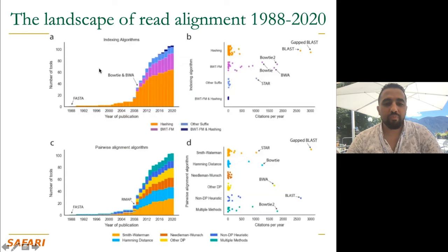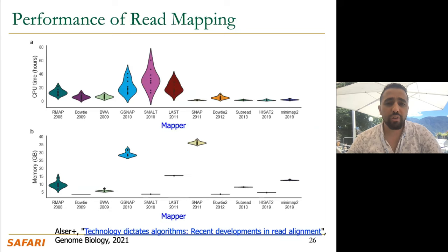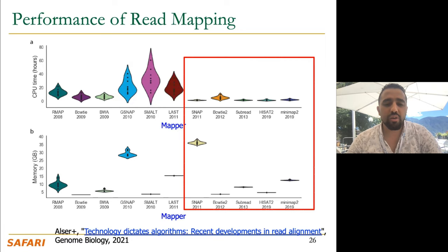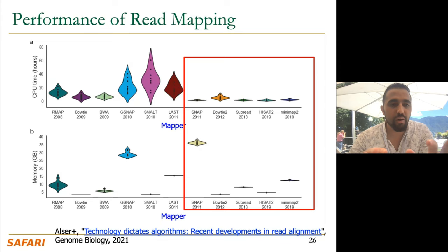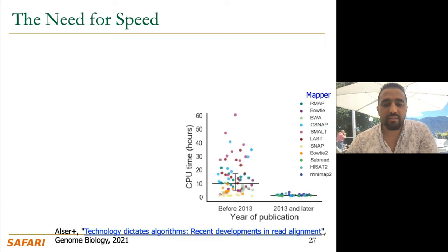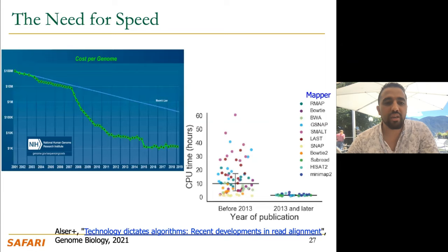We also give results about the number of citations per tool, the year of publication of each tool, and the popularity of the tool. When it comes to execution time, we can see a unique trend: after 2011 or 2012 — more precisely after 2013 when correlated with sequencing cost — most tools start focusing on execution time. Why? As sequencing became cheaper and cheaper, people had a huge amount of data and wanted to process it as soon as possible.